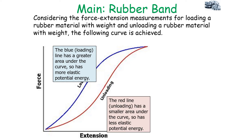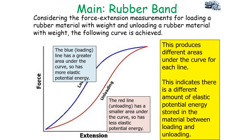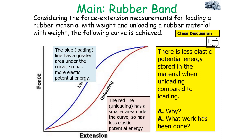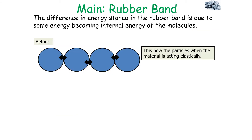The red unloading line has a smaller area under the curve, so less elastic potential energy is stored by the material when it's being unloaded. Because we have different areas under the curve for each line, this indicates a different amount of elastic potential energy stored between loading and unloading. If there's less elastic potential energy when unloading compared to loading, the questions to ask are: why, and what work has been done for the elastic potential energy store to change?